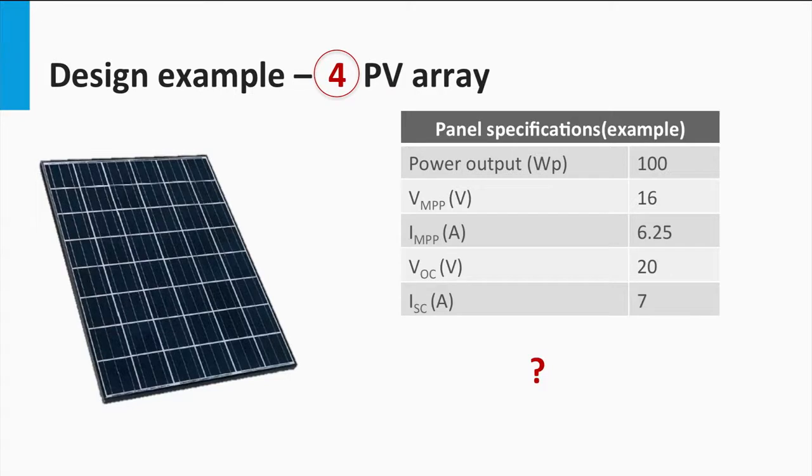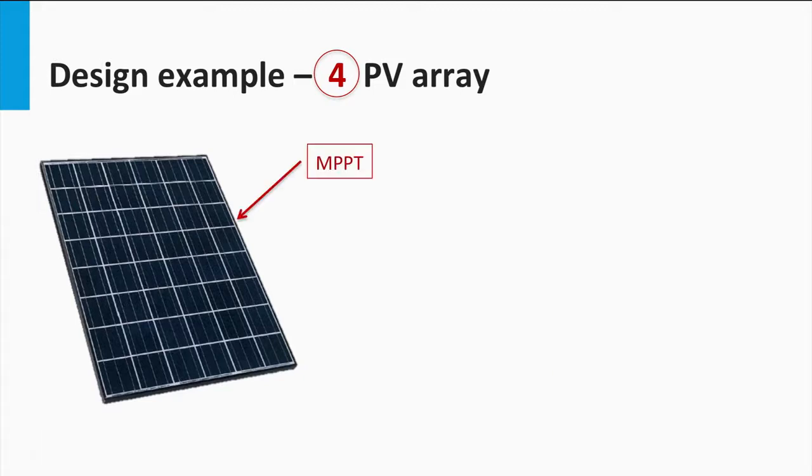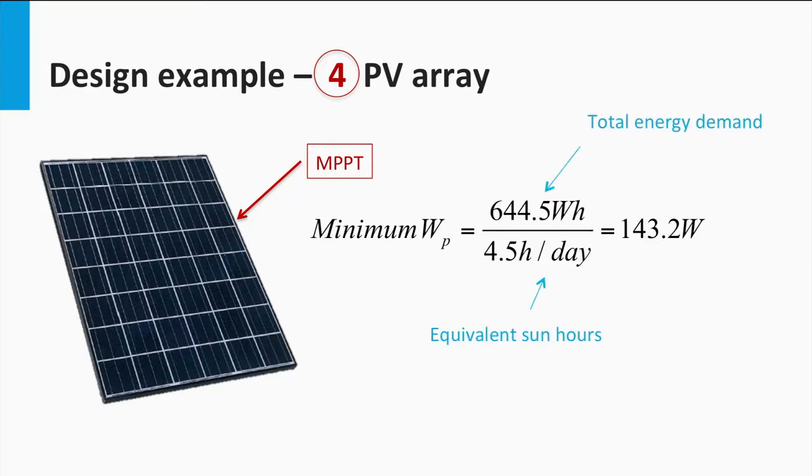Let's look at the electrical specification of an available PV module. It is a 100 Wp rated module with the given voltage and current parameters. Now, we need to find out how many of such modules are required to power the loads. Assuming that the panel would be operated at its maximum power point, we can find out the required number of panels as follows. We can first calculate the amount of minimum PV power required by dividing the total energy demand at the PV array output with the equivalent sun hours. Thus, the minimum PV power required is 143.2 watts.